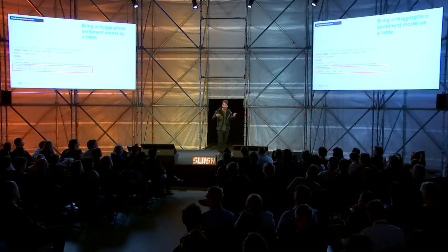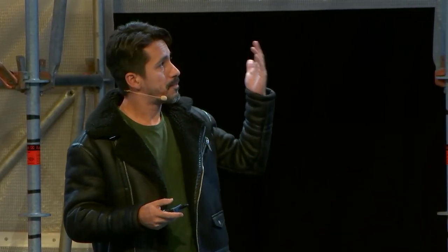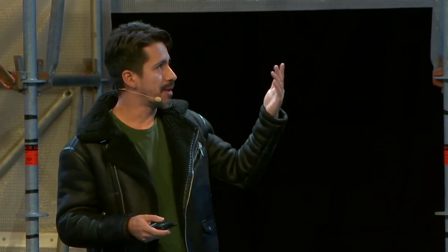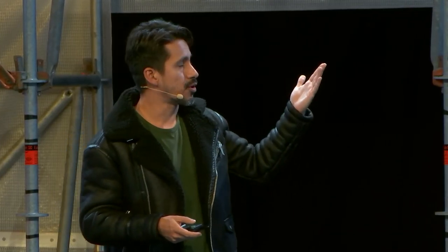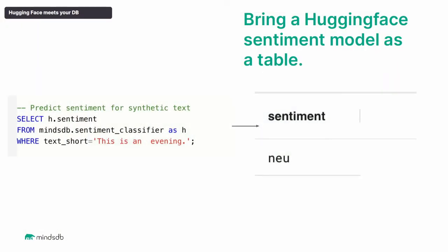And by any database, we mean MySQL, Postgres, Oracle. Once you have this model as a table, it becomes very easy to query that model like if it was a table. So you can ask the sentiment classifier: what will be the sentiment when I have a sentence like this one? For the sake of this example, that sentence is very simple, but you get the concept — it comes back as neutral.